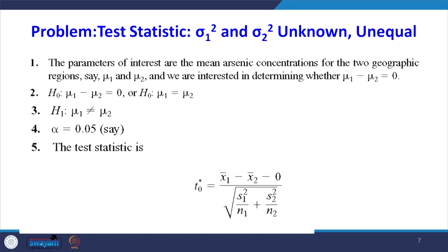Following the steps in hypothesis testing: the parameter of interest is the mean arsenic concentration for the two geographic regions, mu 1 and mu 2. We are interested in determining whether mu 1 minus mu 2 equals 0. The null hypothesis is mu 1 minus mu 2 equal to 0, or equivalently mu 1 equal to mu 2. The alternative hypothesis is mu 1 not equal to mu 2, because the signs are complementary.